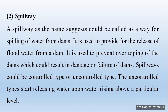Spillway: A spillway, as the name suggests, could be called as a way for spilling of water from dams. It is used to provide for the release of flood water from a dam. It is used to prevent overtopping of the dams, which could result in damage or failure of dams.